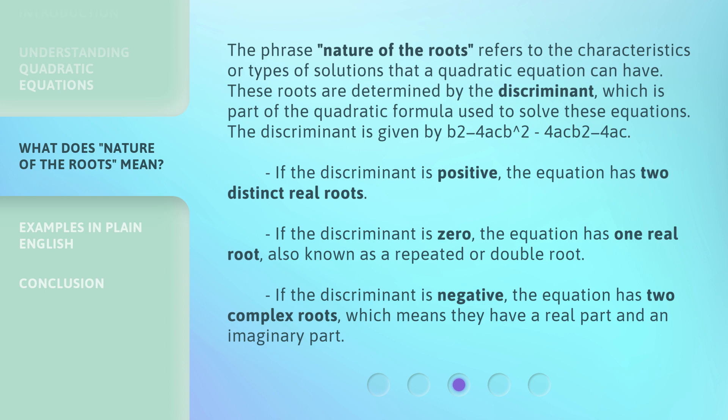If the discriminant is positive, the equation has two distinct real roots. If the discriminant is zero, the equation has one real root, also known as a repeated or double root.